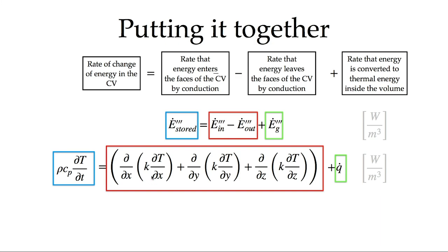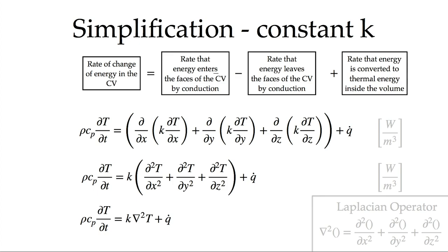This complete equation includes conduction, changes with time, and energy generation, with thermal conductivity K appearing inside the derivative operators. The first simplification assumes constant thermal conductivity. If K is constant, we can pull it outside the derivative operators and collect terms. This reveals another vector calculus operator: the sum of second derivatives of a scalar in each coordinate direction is the Laplacian operator, written ∇²T. With constant conductivity, the equation simplifies greatly in vector notation.